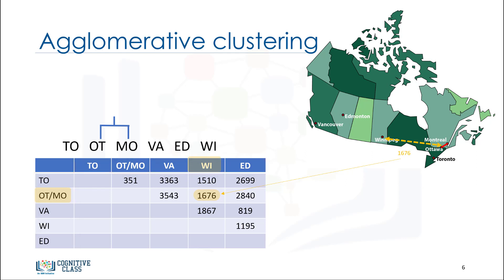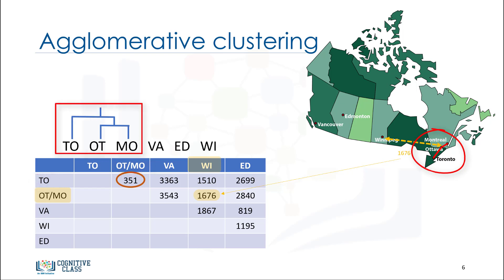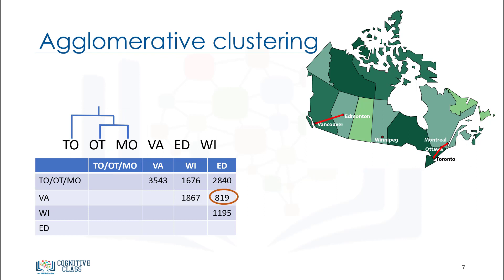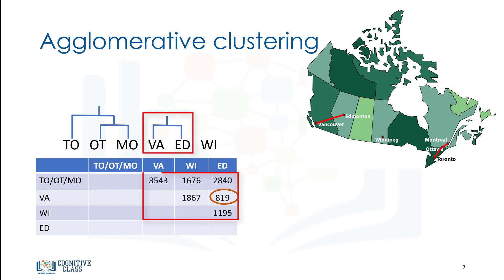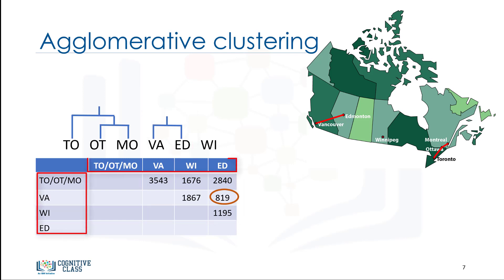Next, we look for the closest clusters once again. In this case, Ottawa-Montreal and Toronto are the closest ones, which creates another cluster. In the next step, the closest distance is between the Vancouver cluster and the Edmonton cluster, forming a new cluster and updating their data in the matrix table. Essentially, the rows and columns are merged as the clusters are merged and the distances updated. This is a common way to implement this type of clustering and has the benefit of caching distances between clusters.